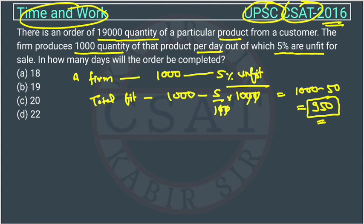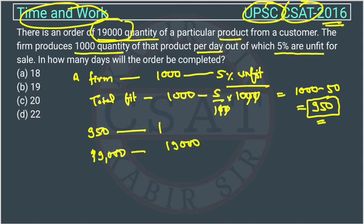The company has to produce 19,000 units in total. In one day they are producing 950 fit units. So to produce 19,000 units, it will take 19,000 divided by 950 days. Using the unitary method here — the zeros cancel out, and you can simplify further by dividing through by 5.